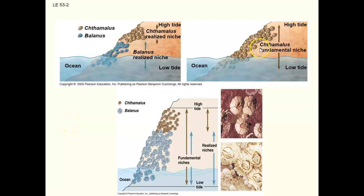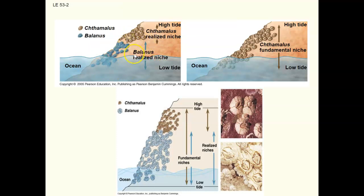Here's a picture illustrating this with barnacles. The brown species of barnacle has a large fundamental niche — without competition it can use all of this area on the rocky shore. But in the presence of another species of barnacle, its fundamental niche gets drastically reduced to its realized niche. The blue barnacle, on the other hand, is using its entire fundamental niche as its realized niche.